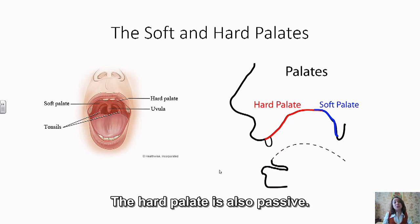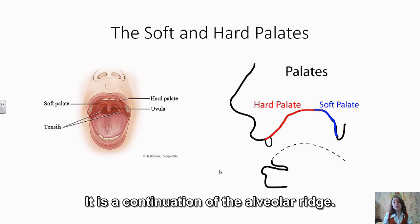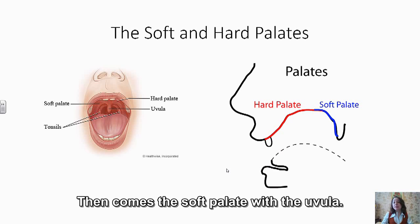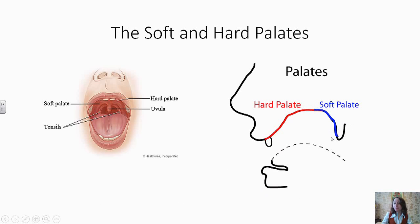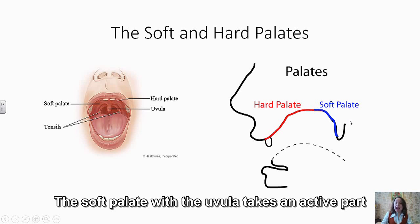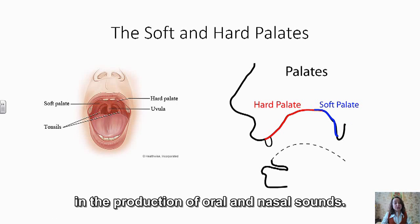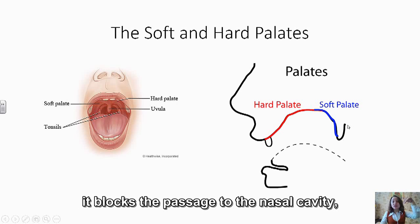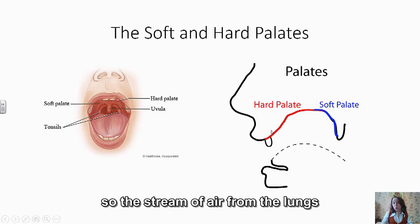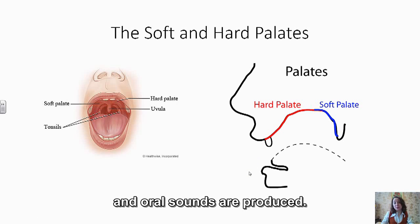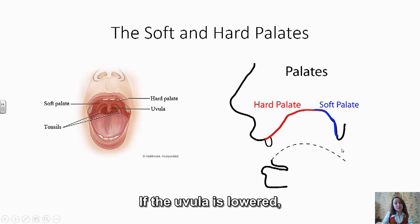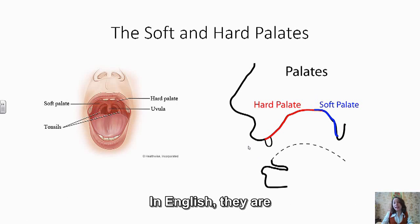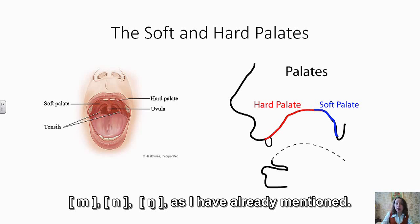The hard palate is also passive — it is a continuation of the alveolar ridge. Then comes the soft palate with the uvula. The soft palate and uvula take an active part in the production of oral and nasal sounds. When the uvula is raised, it blocks the passage to the nasal cavity, so the stream of air from the lungs goes out through the mouth and oral sounds are produced. If the uvula is lowered, the stream of air goes out through the nasal cavity and nasal sounds are produced — in English, /m/, /n/, and /ŋ/.